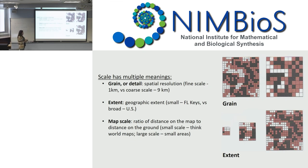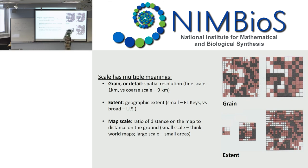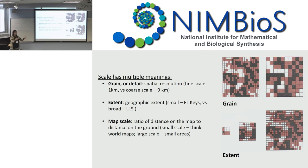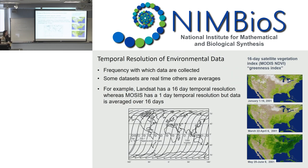I try not to use the word 'scale' because it actually has several meanings: grain, extent, and map scale. Grain is the actual size of your cells; extent is the actual area you're looking at. Map scale is different — a large scale map means you're really focused in. These are nearly opposite concepts, so I try to stick with the terms grain and extent to avoid confusing readers.